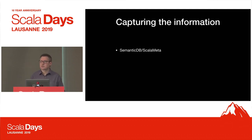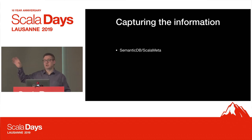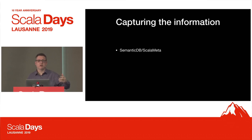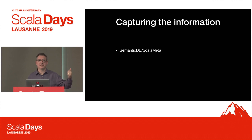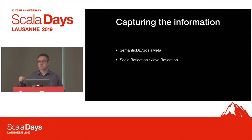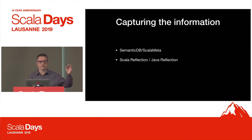So how do we capture the information? We started using SemanticDB and ScalaMeta. I started writing this as a ScalaFix rule - actually it turns into two ScalaFix rules. The first one goes over the code, does the analysis, and returns no result. The second one then applies the transformations. Because ScalaFix does one file at a time - it loads a file, gives you the semantic information, and says what do you want to do with this file? So I go through it the first time to run the analysis rule, that spits out a bunch of files, and then I run a modification rule which does the logic.